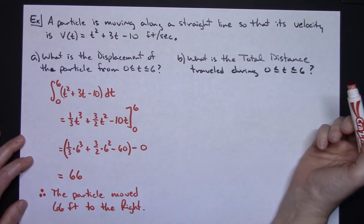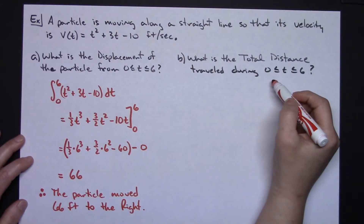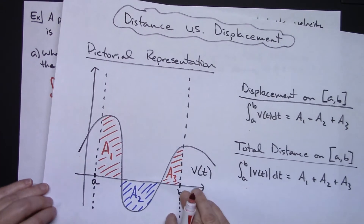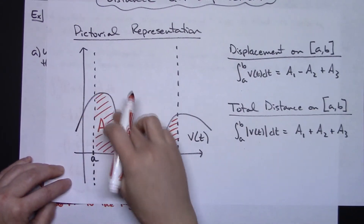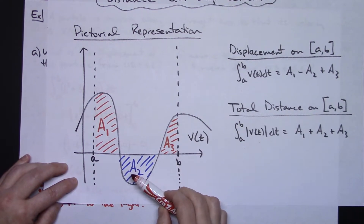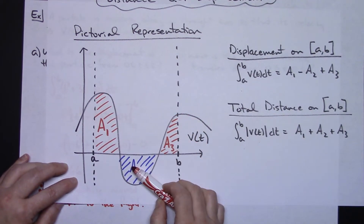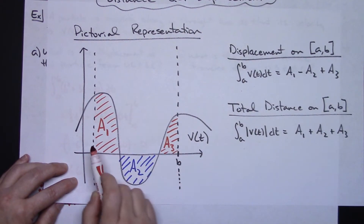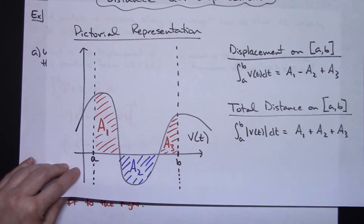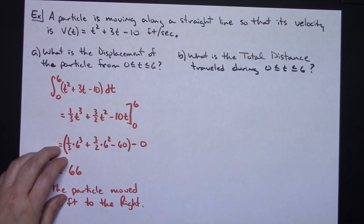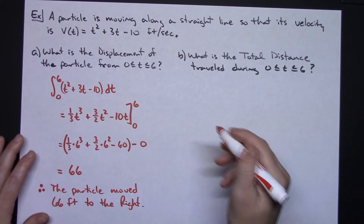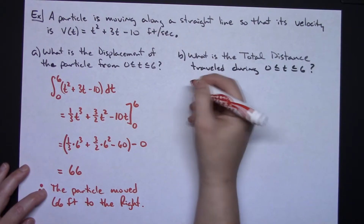Now for Part B, what's the total distance traveled during the interval from 0 to 6? Recalling the picture, there could be sections of the velocity function that are negative or below the x-axis. So I need to find, within the interval from 0 to 6, where the velocity is positive and where it's negative. I'm going to do that using a number line.